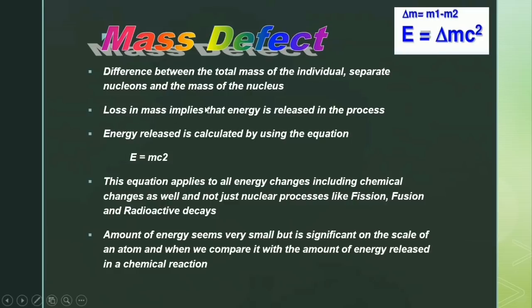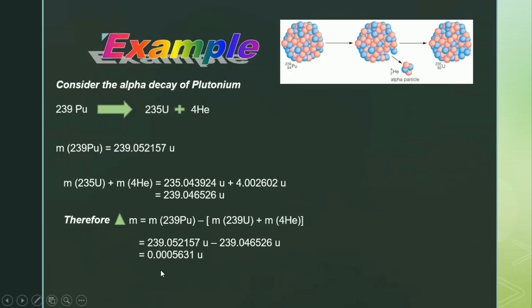Loss in mass implies that energy is released in the process. Energy released is calculated using the equation E = mc². This equation applies to all energy changes including chemical changes as well, and not just nuclear processes like fission, fusion, and radioactive decays. The amount of energy seems very small but is significant on the scale of an atom, especially when compared with the amount of energy released in a chemical reaction.